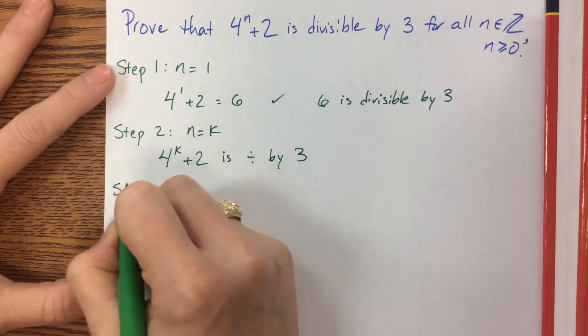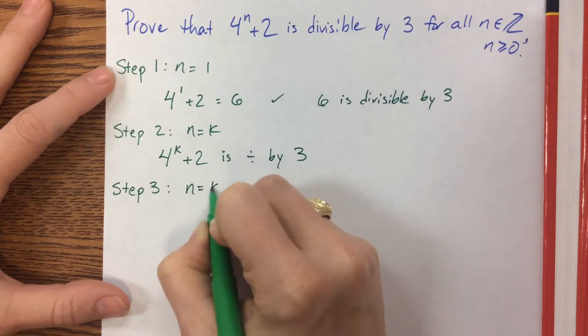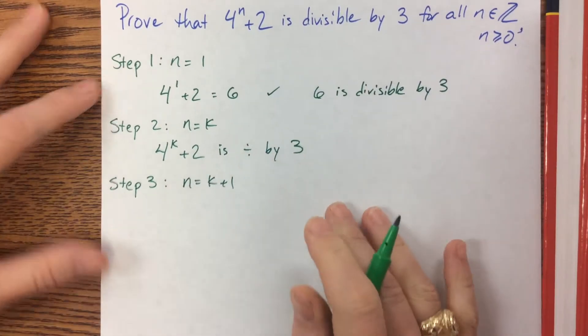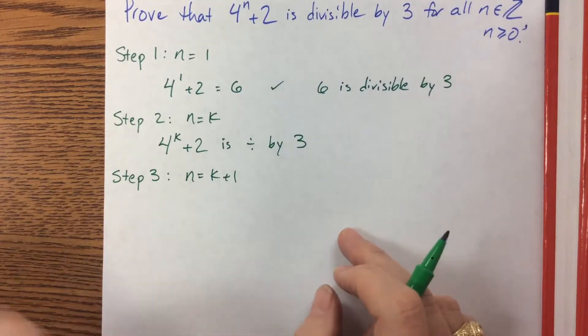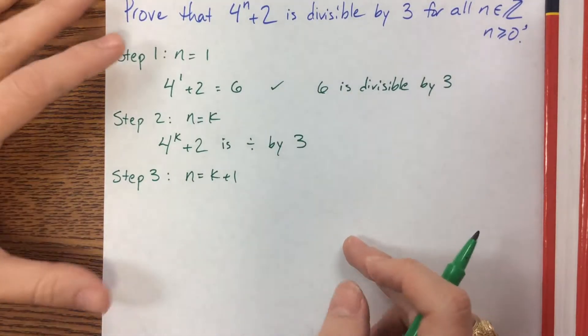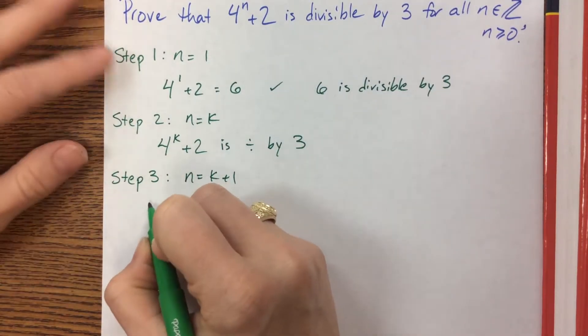Now looking at step 3, we need to show that n equals k plus 1 is true. So somehow I need to manipulate this scenario so that I can get to something where I know for sure it's divisible by 3. There's a few different ways to do it but here we go.